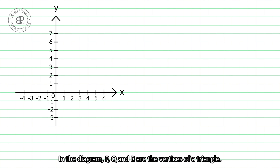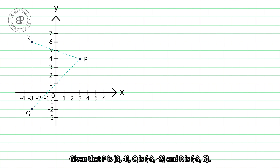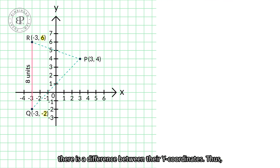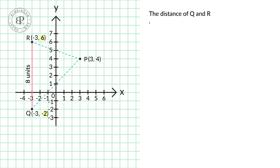In the diagram, P, Q and R are vertices of a triangle. Given that P is (3, 4), Q is (negative 3, negative 2), and R is (negative 3, 6). The distance of Q and R is 8 units because there's a difference between their y coordinates. Thus, QR equals to y2 minus y1, or 6 minus negative 2, which equals 6 plus 2, which equals to 8 units.